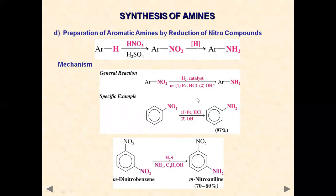This reduction step can also be used for selective reduction. For example, meta-dinitrobenzene in the presence of hydrogen sulfide in ammonia and ethanol gives selective reduction — only one of the nitro groups is reduced to give meta-nitroaniline.